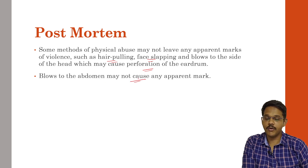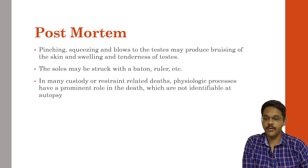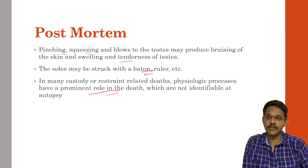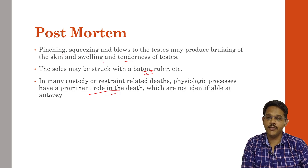Blows to certain areas may not cause any apparent external mark, and the person might die because of internal hemorrhage, which is also very difficult to prove. Injuries like pinching, squeezing, and blows to the soles may produce bruising of the skin. The soles may also be struck by a baton or rulers, and those injuries are very difficult to see because the skin on the soles is very thick and bruises are usually not appreciated there. In many custodial and restraint-related deaths, physiological processes play a prominent role in deaths that are not easily identified at post-mortem.